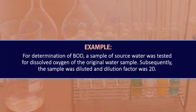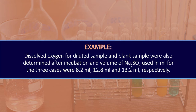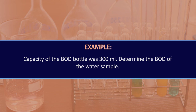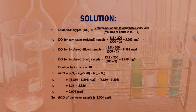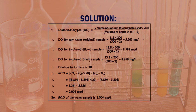Example: for determination of BOD, a sample of source water was tested for dissolved oxygen of the original water sample. The sample was diluted with a dilution factor of 20. Dissolved oxygen for the diluted sample and blank sample were determined after incubation. Volumes of sodium thiosulfate used for the three cases were 8.3 ml, 12.8 ml, and 13.2 ml respectively. Capacity of the BOD bottle was 300 ml. DO for the raw water sample equals 8.3 into 200 divided by (300 minus 2), giving 5.503 mg per liter.